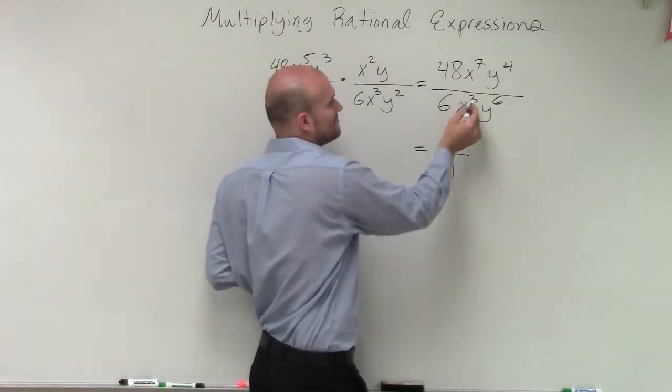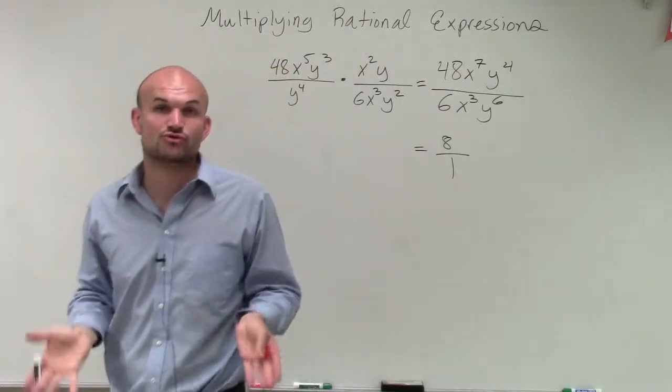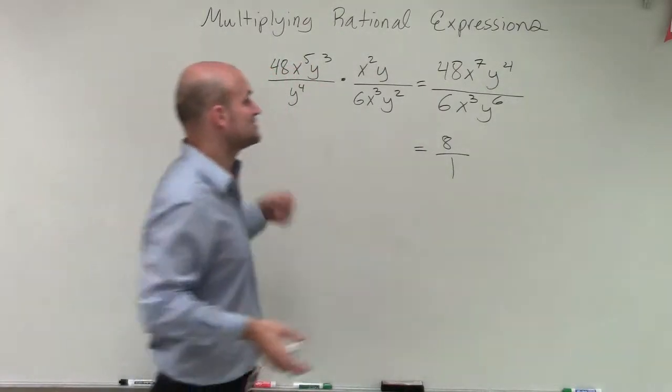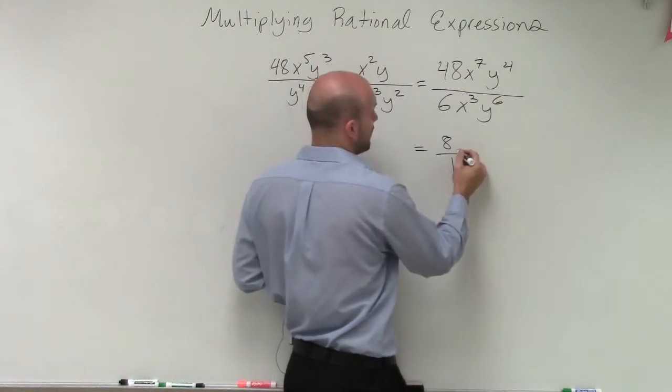Now x to the seventh divided by x cubed - remember you subtract them. So 7 minus 3 is positive 4.